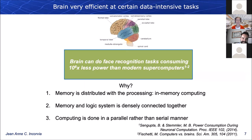We take inspiration from the brain, which is very efficient at certain data-intensive tasks. We're not going to win against a supercomputer on summing large numbers, but for things like face recognition, our brains are still a lot better — consuming about a million times less power than a modern supercomputer. Memory and processing are very interconnected, densely connected, with a lot of parallel processing. These are inspirations for neural networks with new hardware.